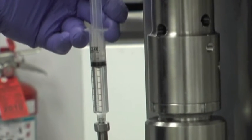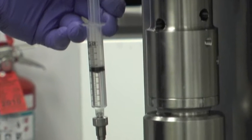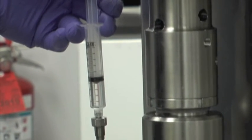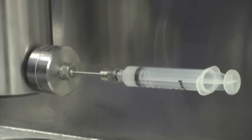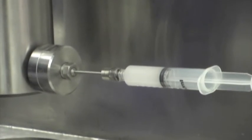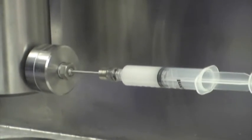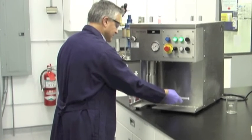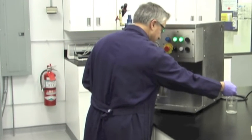Cleaning the machine is just as easy. No disassembly of the equipment is required. Simply run an accepted solution through the processor, exactly as you did your product, and repeat until the collection syringe contains clear solution. Steam in place options are also available for pharma grade applications.